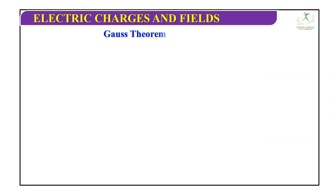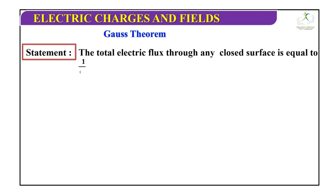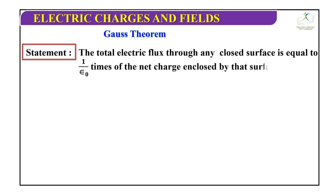Gauss theorem: What is the statement? The total electric flux through any closed surface is equal to 1 by epsilon naught times the net enclosed charge, or charge enclosed by that surface.